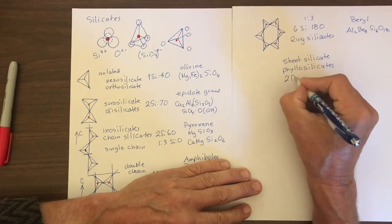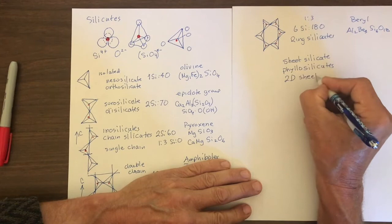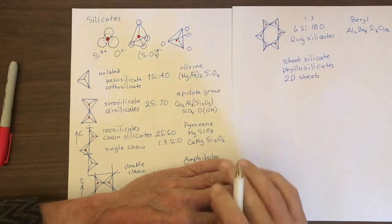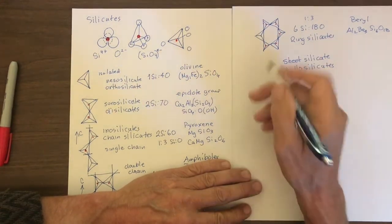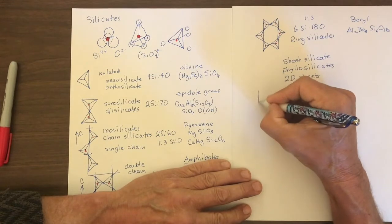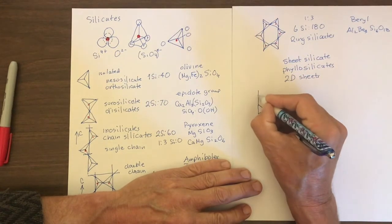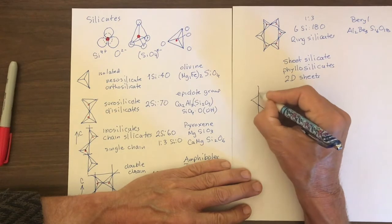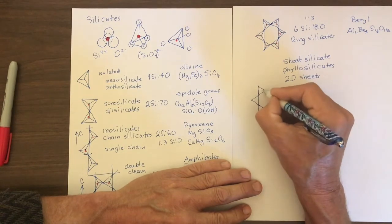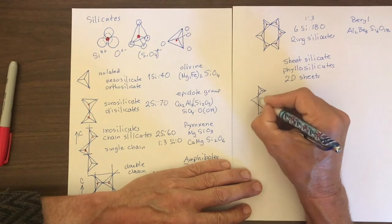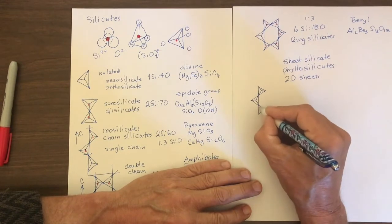So 2D sheets. Let's look at how these work. We could start with what we did above, the same sort of geometry in a single plane. We have this sort of geometry of the tetrahedral groups that are linked together, like that.